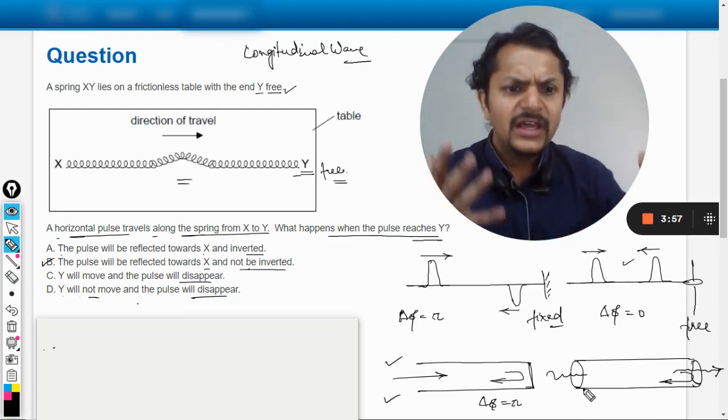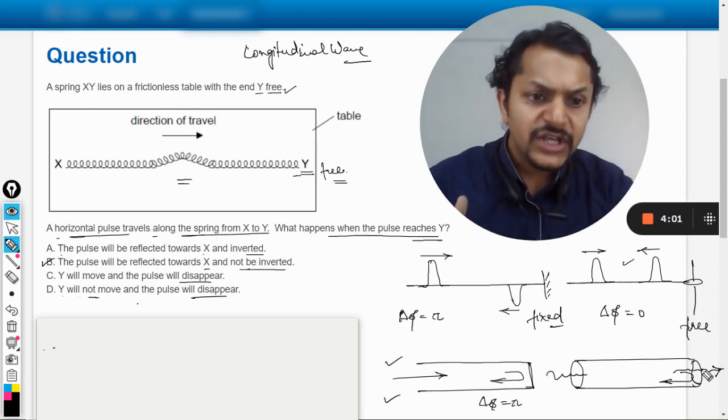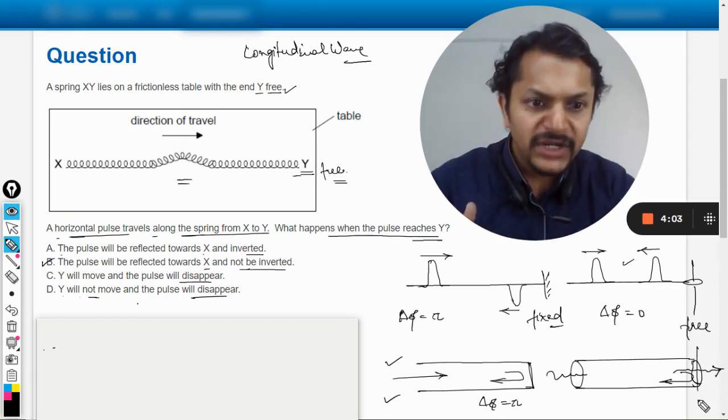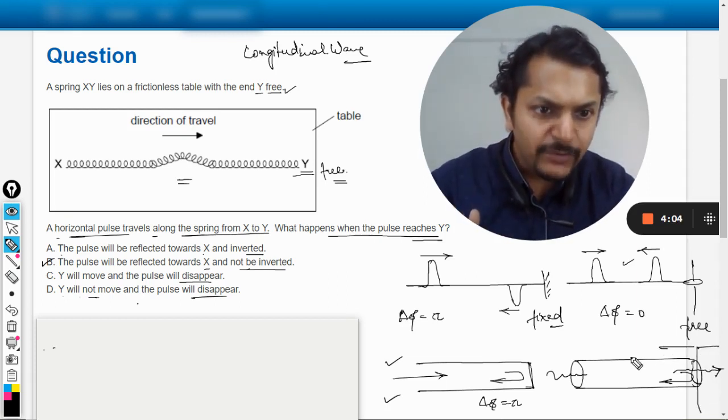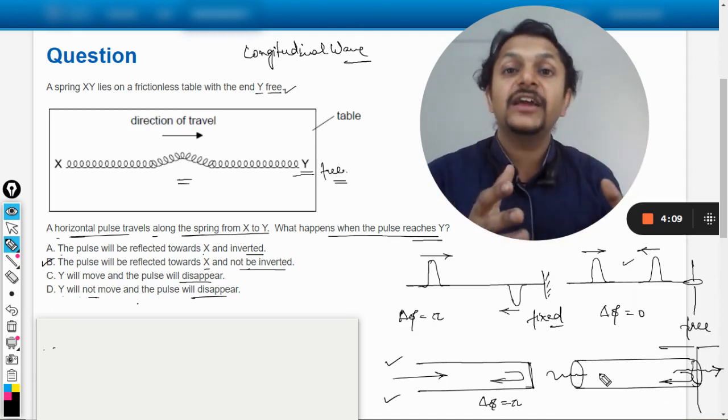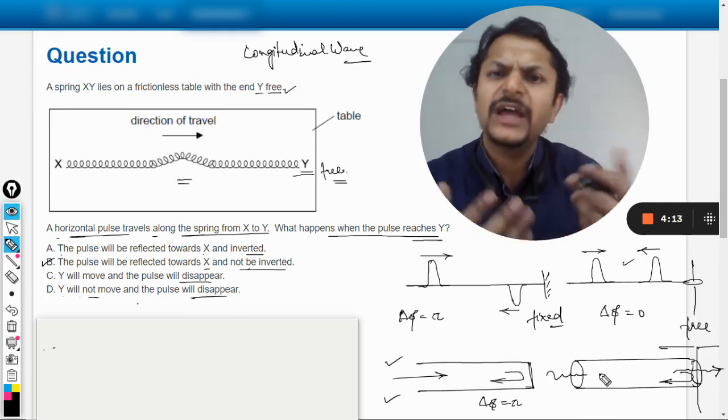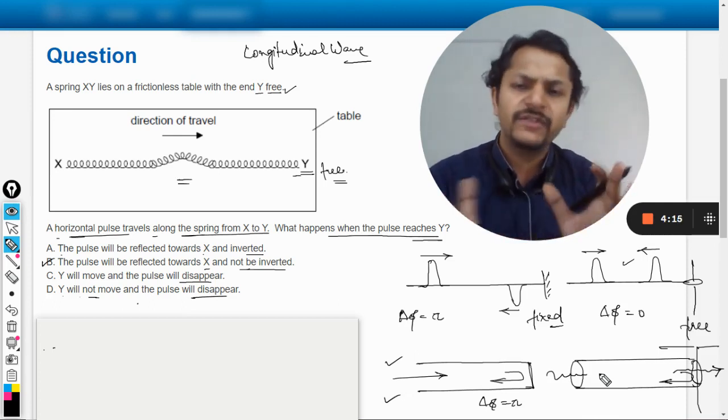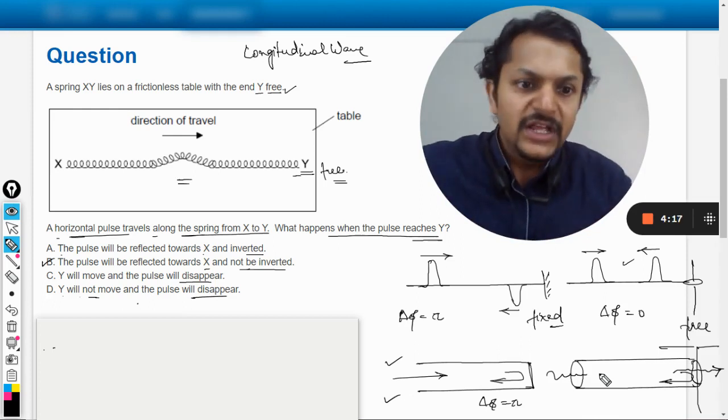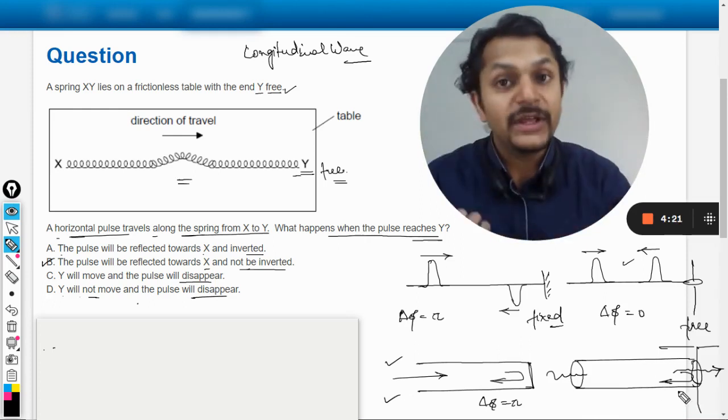There will be a reflection here because this medium, like the medium outside is different from the medium inside. There will be a reflection, and that reflection will be, there will be a phase change also. So that depends. In this case I will say there will be no phase change, but it would be getting reflected.